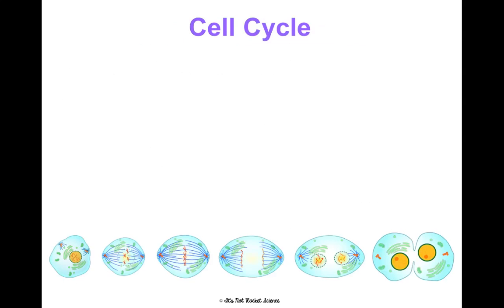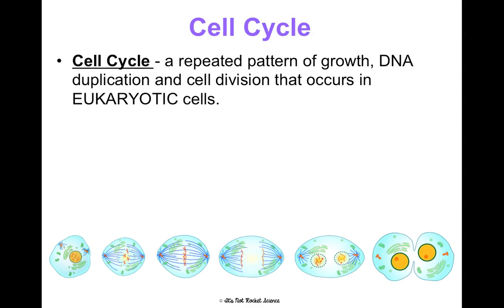We're going to talk a lot more about stem cells and do a little research about them, but that's going to be separate from our notes. Now we're going to talk about the cell cycle. When we say cells are making identical copies of themselves, they're doing that by doing this thing called the cell cycle — a repeated pattern of growth, DNA duplication, and cell division. This occurs in eukaryotic cells: plants, animals, humans, fungus, protists.